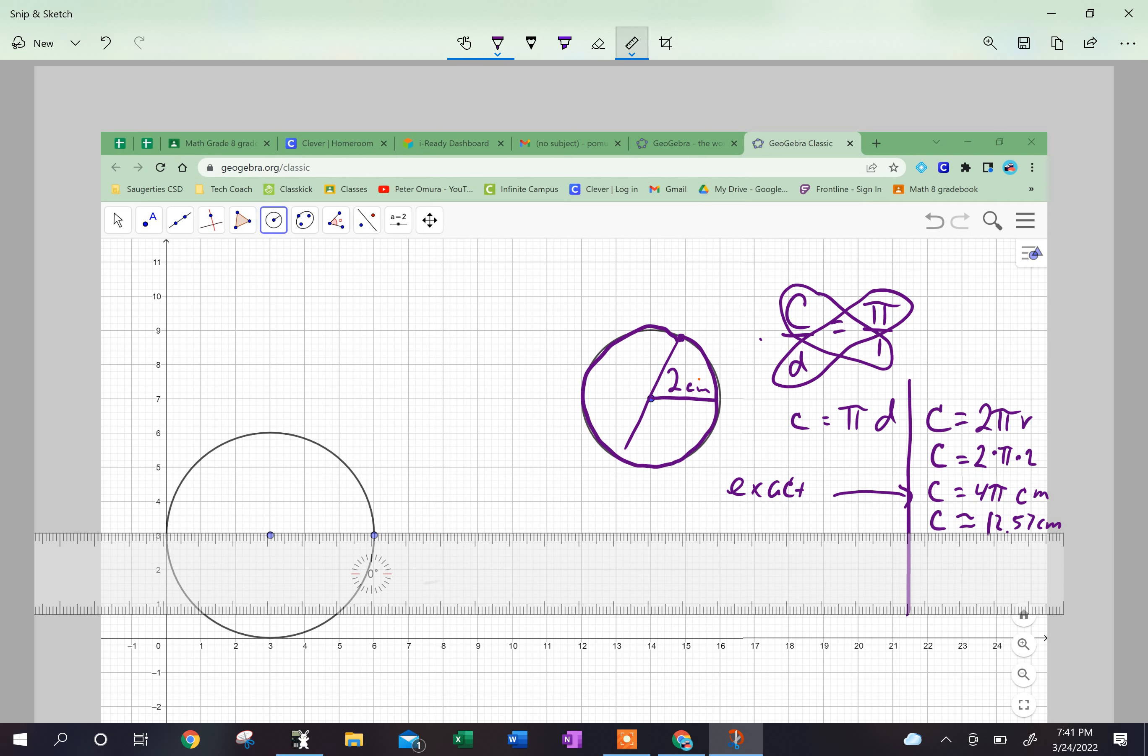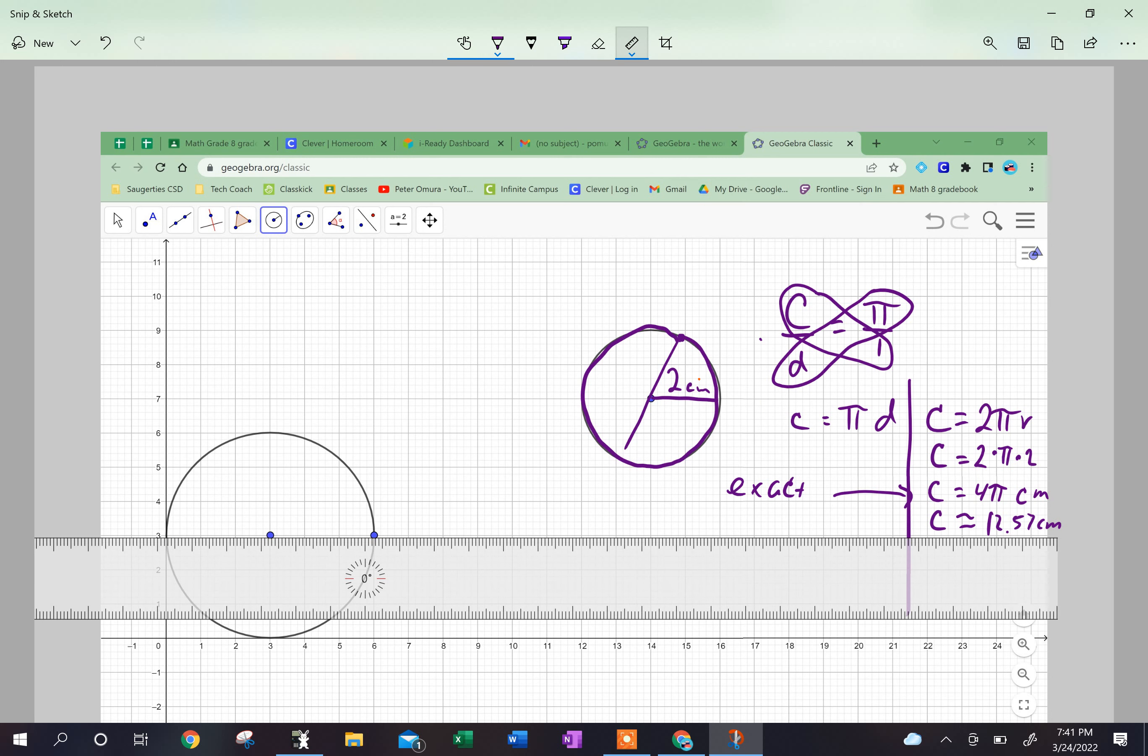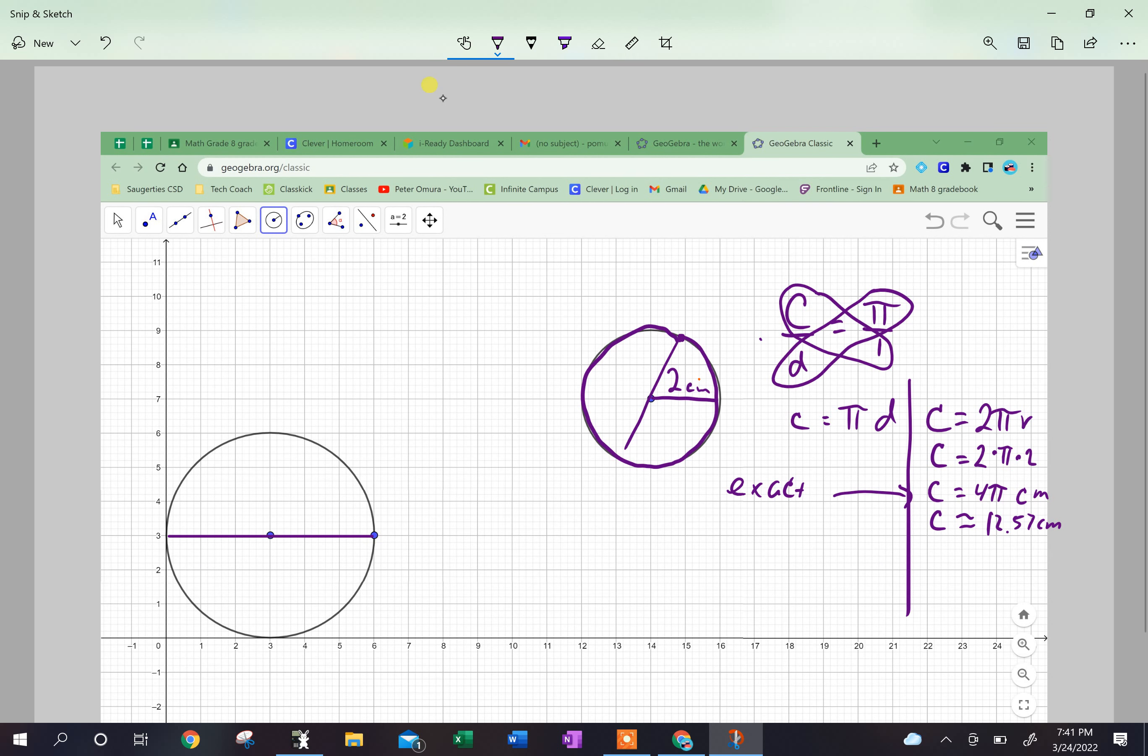All right, so now let's take a look at this one over here and we're going to do another example with this. Let's say I know that my diameter looks to be one, two, three, four, five, six. So my diameter is six centimeters here. So once again I can use C = πd or C = 2πr. Well since I know the diameter, I'll probably choose this one.